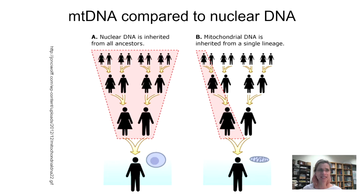Men only pass on nuclear DNA. This unilineal inheritance pattern makes it much more straightforward for ancestry studies — you don't have to worry about recombination; it's like studying a clone. Genetic mutations occur, but the inheritance is simple. Mutations arise, and then every descendant has it. The founder effect is really straightforward in mitochondrial DNA.